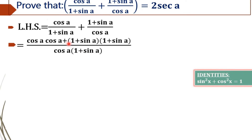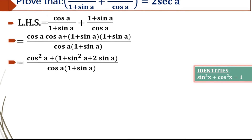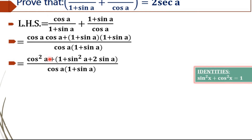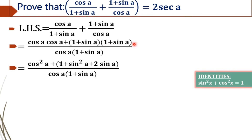Now the next step: we are going to expand the numerator. That is, cos A into cos A will give cos squared A, plus 1 plus sin A into 1 plus sin A gives 1 plus sin squared A plus 2 sin A. That is, 1 plus sin A whole squared using the identity (A + B) squared equals A squared plus 2AB plus B squared.